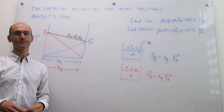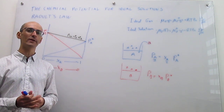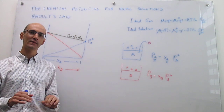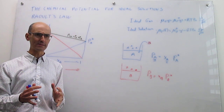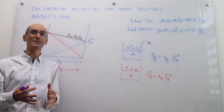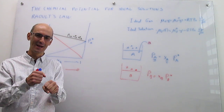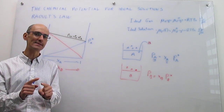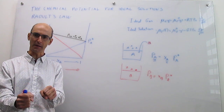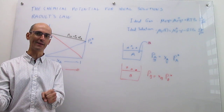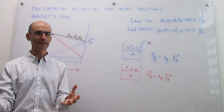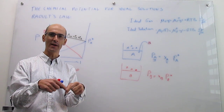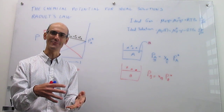Let's explain what an ideal solution is. An ideal gas required no interactions between the gas particles — generally at low pressures when particles are really far apart and attractions or repulsions are negligible. Now in an ideal solution, it's impossible to have molecules far apart from each other; they are going to be very close and they are going to interact. However, even though there are interactions, the solution can still be ideal if the interaction of a molecule of A with a molecule of B is very similar to the interaction of A with itself and B with itself.